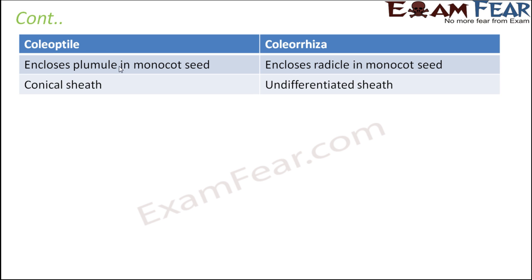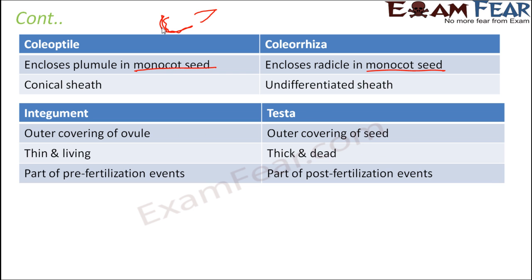Coleoptile and coleorhiza are both present in monocot seeds — they are not present in dicot seeds. Coleoptile encloses the plumule; it is a covering of the plumule. Coleorhiza is a covering of the radicle. Structure-wise, coleoptile is a conical sheath shaped like a cone, whereas coleorhiza is an undifferentiated sheath — just a mass of cells which encloses the radicle.